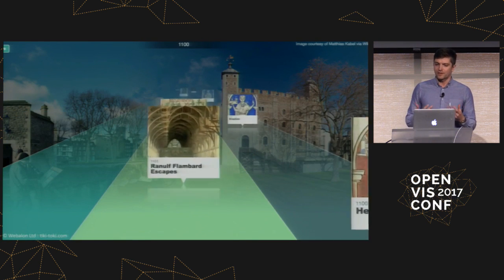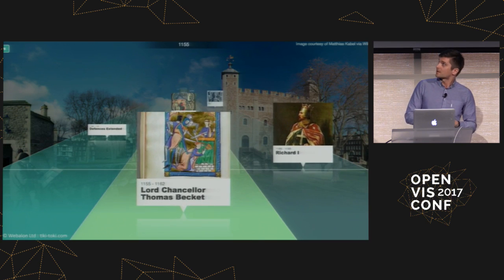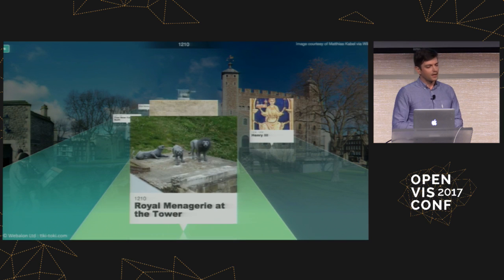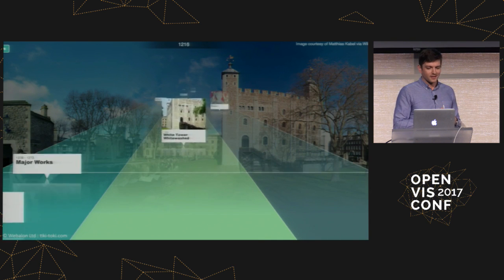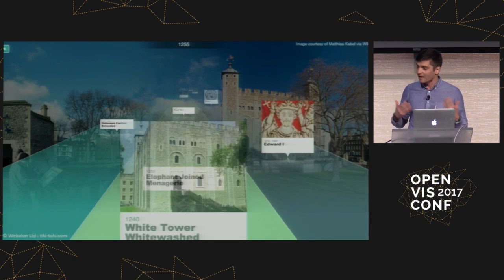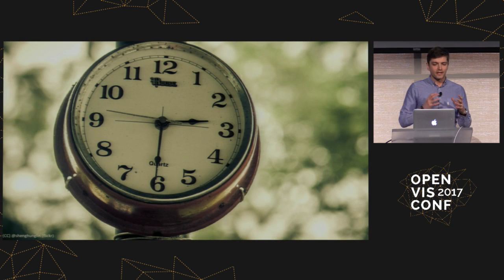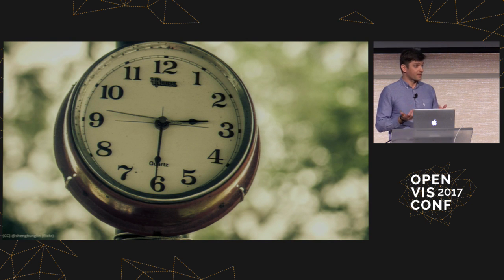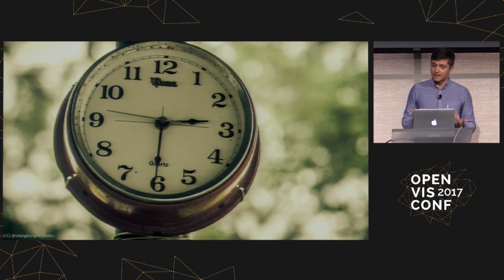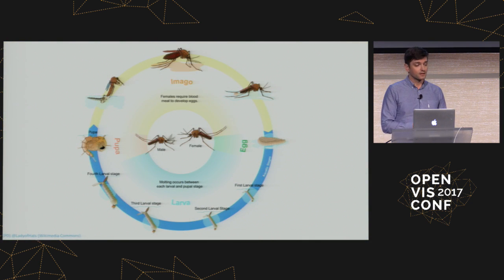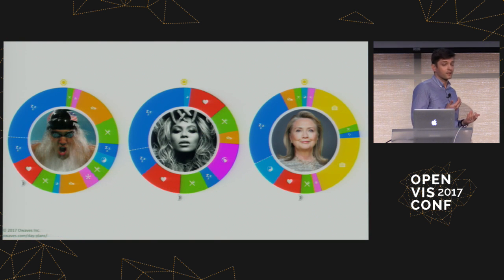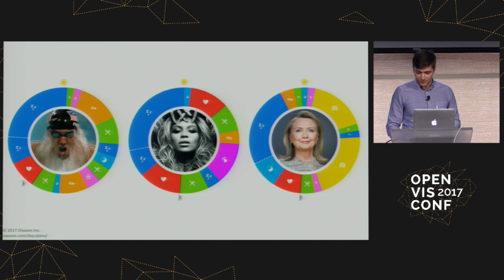We can see this egocentric view of time in examples like one depicting the history of the Tower of London — it's a bit like standing on a moving sidewalk in an airport with time flying past you. Another really common way we represent time is the circle, especially for natural cycles: events that repeat, biological life cycles, seasons of the year, daily routines like when we sleep, eat, relax, or when Beyoncé performs.